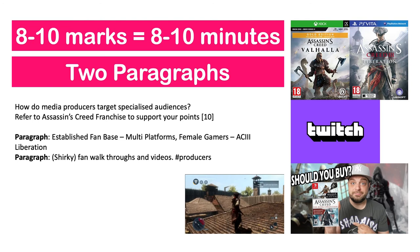For 8 to 10 marks you're looking at 8 to 10 minutes — probably just two paragraphs. Look at this past exam question: 'How do media producers target specialised audiences? Refer to the Assassin's Creed franchise to support your points.' Your first paragraph might talk about an established fan base across multi-platforms — Switch, Xbox, PC, PlayStation. You could also talk about Assassin's Creed 3 with the female character targeting female gamers. Your final paragraph could talk about Shirky and fan walkthroughs and videos, and how audiences have become producers themselves, speaking back to the producers of the game.